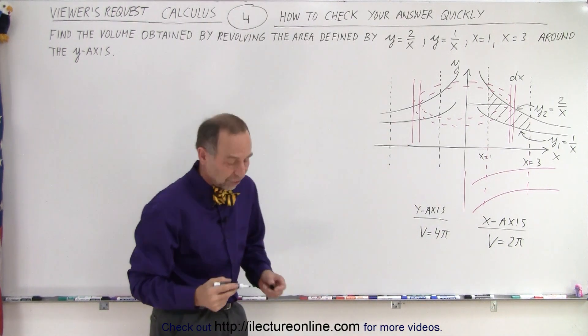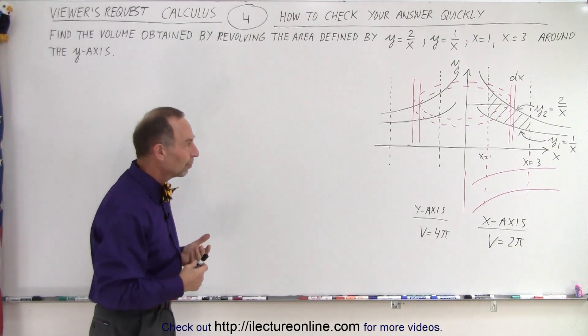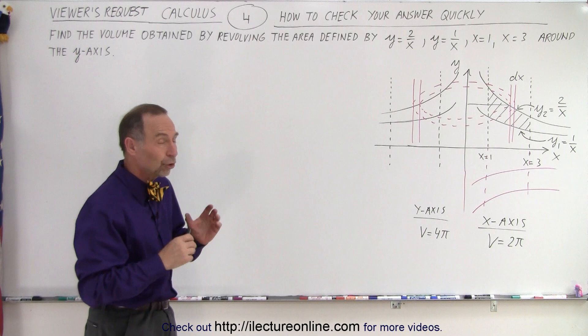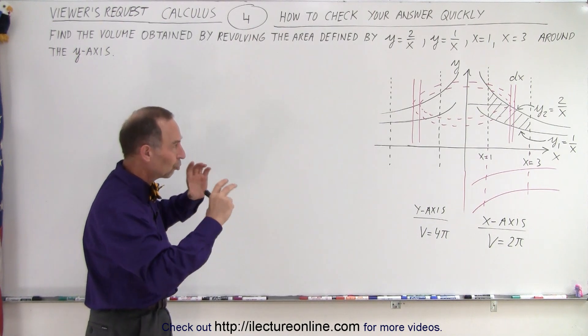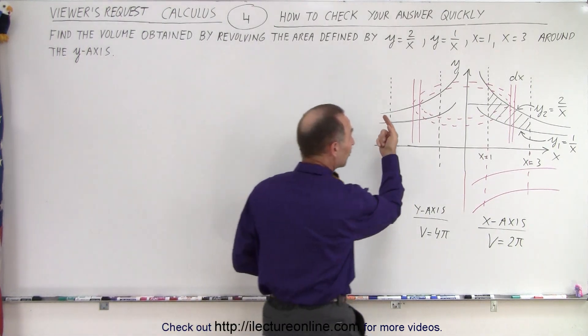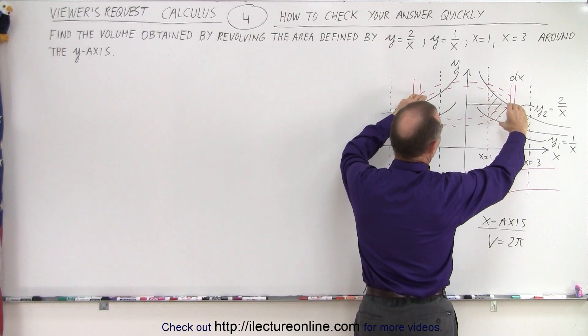Now, let's say this was a test question and you're not sure you did it correctly and you wanted to have some near certainty that it was close to being correct. Well, what you could do is approximate the structure and then simply use geometry to find the volume. For example, when we revolve this around the y-axis, you get kind of a tire structure.